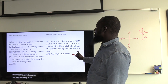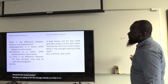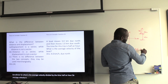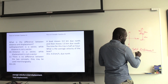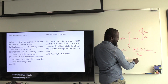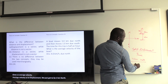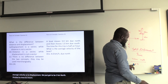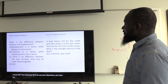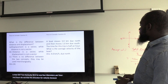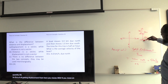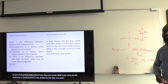They're asking for average velocity. The displacement is 2 kilometers due north. Average velocity is total displacement divided by time. Total displacement is 2 kilometers north divided by time 0.5 hours. So 2 divided by 0.5 gives 4 kilometers per hour due north. That's the direction for velocity because velocity is also a vector quantity.